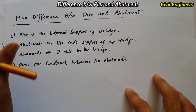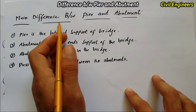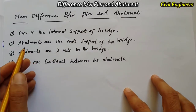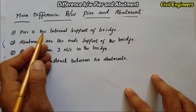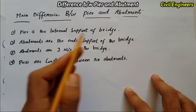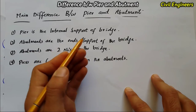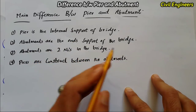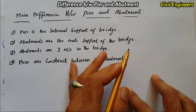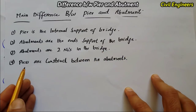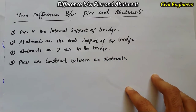Here is the main difference between pier and abutment. First: a pier is the internal support of the bridge, and abutments are the end supports of the bridge. Second: abutments are two in number in a bridge, and piers are constructed between the abutments.